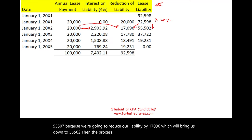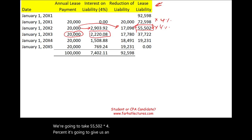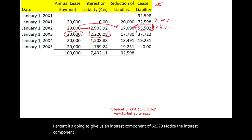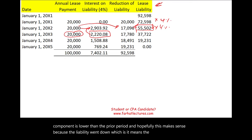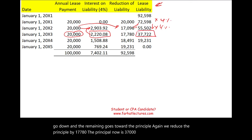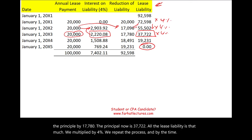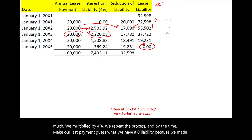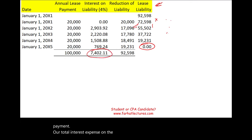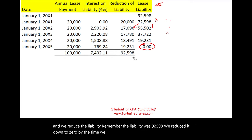The process repeats: fifty-five thousand five hundred two times four percent yields an interest component of two thousand two hundred twenty dollars. Notice the interest component is lower than the prior period because the liability went down. The remaining portion of the twenty-thousand payment reduces principal by seventeen thousand seven hundred eighty, leaving a liability of thirty-seven thousand seven hundred twenty-two. By the time the last payment is made, the liability reaches zero. Total interest expense across all periods equals the total cash paid of one hundred thousand minus the original liability of ninety-two thousand five ninety-eight.